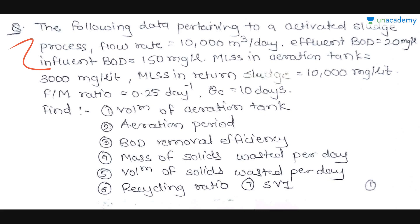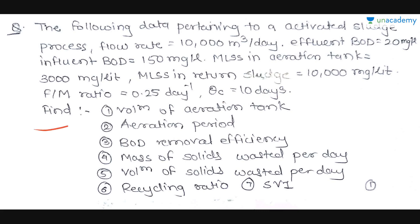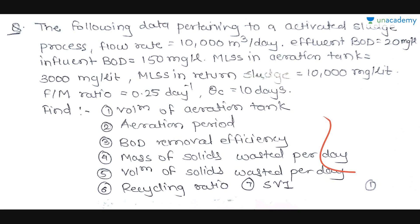Let's start with this question. The following data pertains to an activated sludge process: flow rate Q is 10,000 m³/day, effluent BOD is 20 mg/L, influent BOD is 150 mg/L, MLSS in aeration tank is 3000 mg/L, MLSS in return sludge is 10,000 mg/L, F/M ratio is 0.25 per day, and θC (mean cell residence time) is 10 days. We need to find: volume of aeration tank, aeration period (detention time), BOD removal efficiency, mass of solids wasted per day, volume of solids wasted per day, recycling ratio, and sludge volume index.